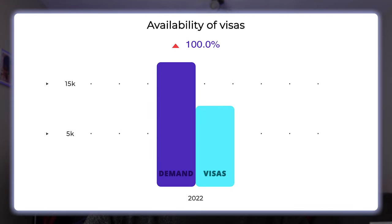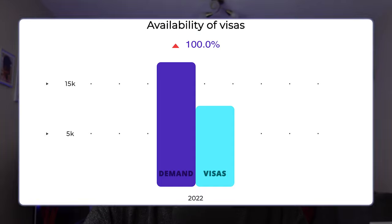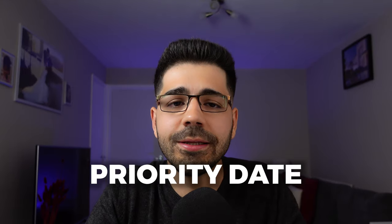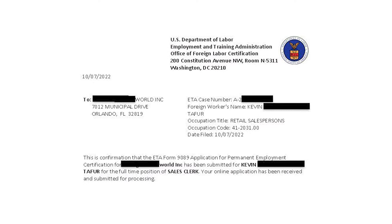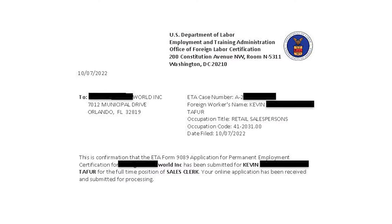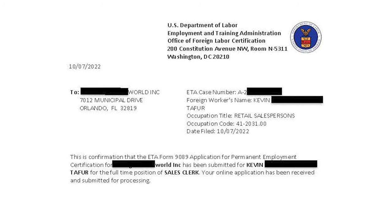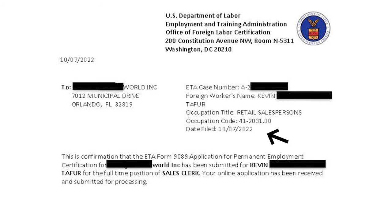When the annual demand for visas in a category is greater than availability, a waiting list or backlog is created. The applicant's place in the queue is determined by their priority date, which is the day their labor certification or ETA-9089 was filed. As shown on screen, you can see a sample document with the applicant's name, sponsor name, case number, and priority date.